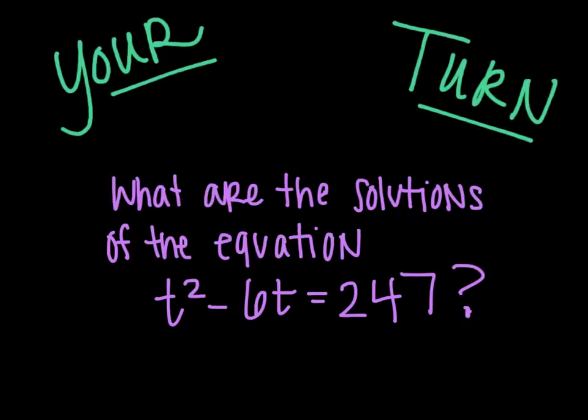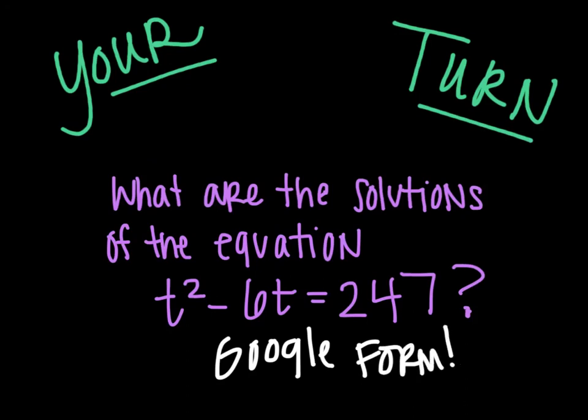It is your turn. What are the solutions to the equation t squared minus 16t equals 247? Make sure you show all of your work and keep it on your notes page. And then, I will have you put your answer on the Google form. Don't forget to do that. Very important. So, Google form your answers to your solution.